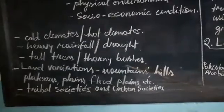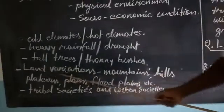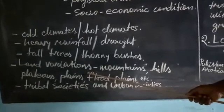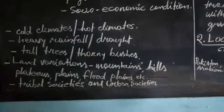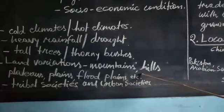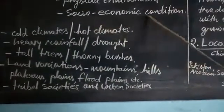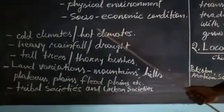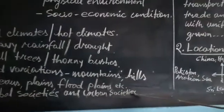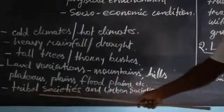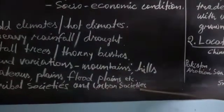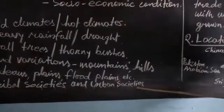There are also land variations — different types of lands we have in India: mountains, hills, plains, plateaus, and so on. When we talk about socio-economic conditions, we see our societies are tribal and urban. Tribal societies mostly live in rural areas and villages, while urban societies live in towns and urban areas.